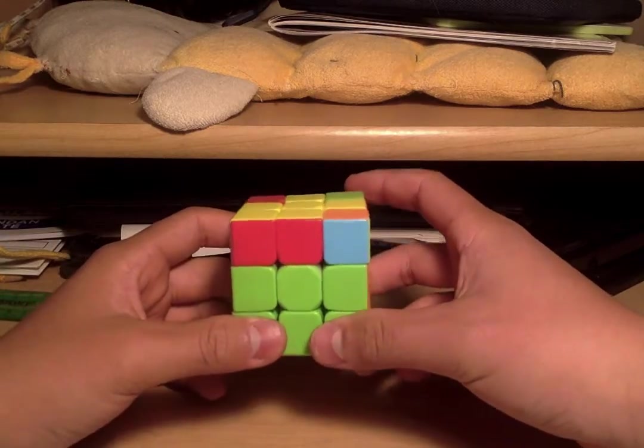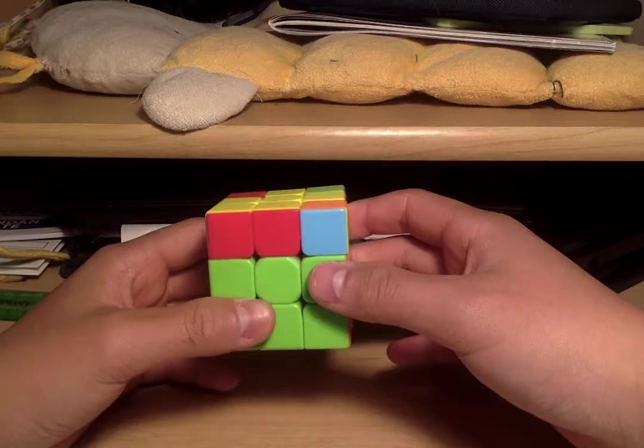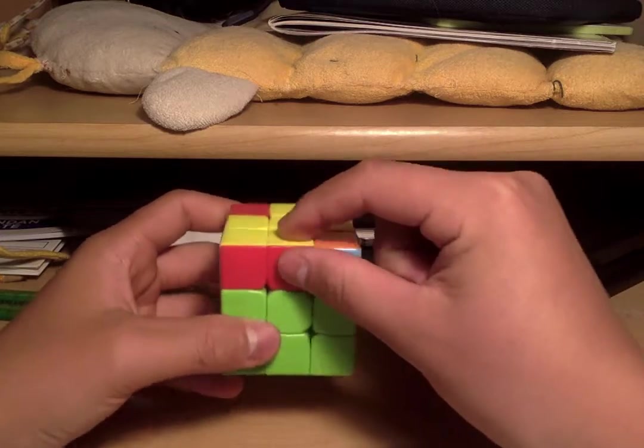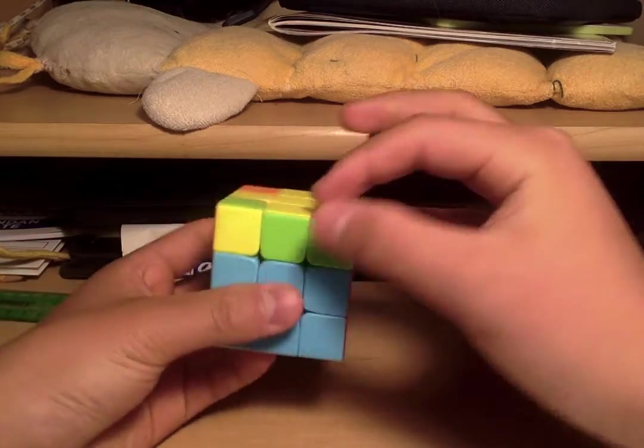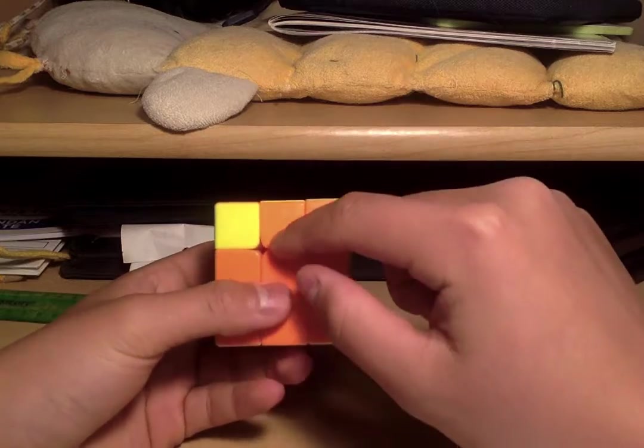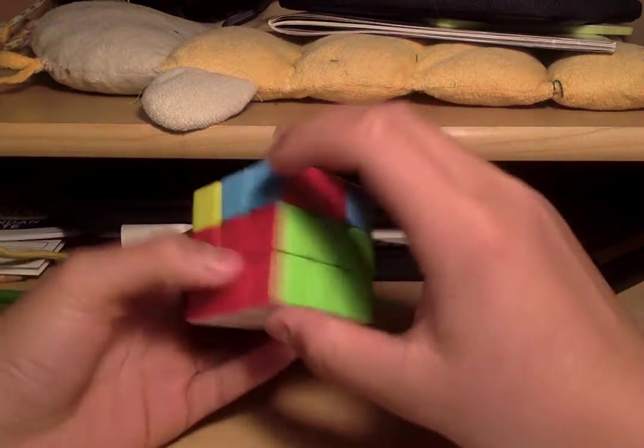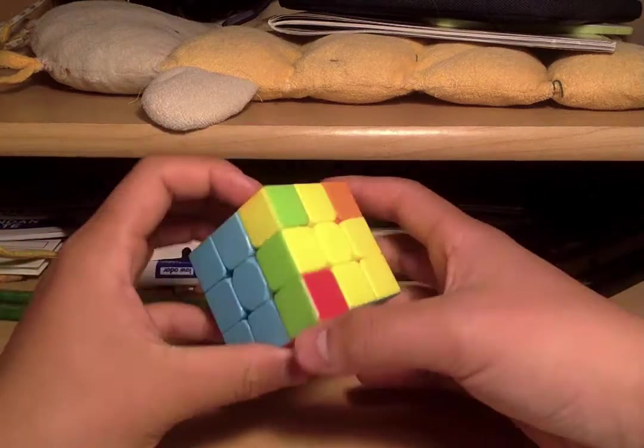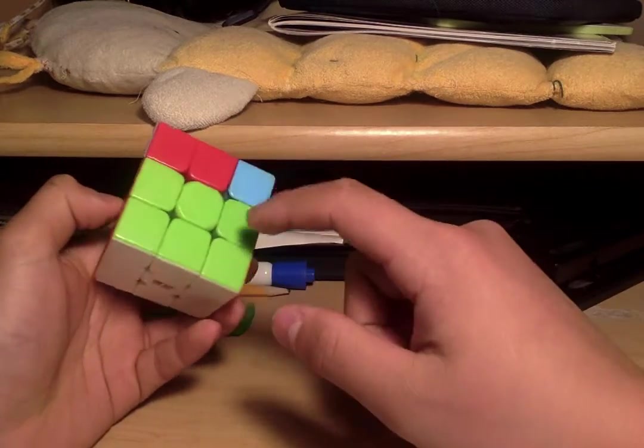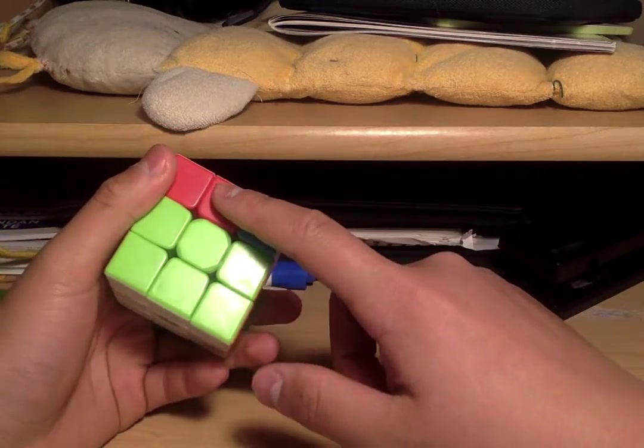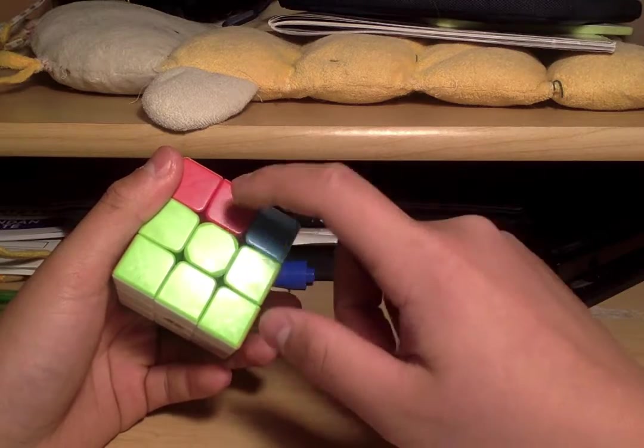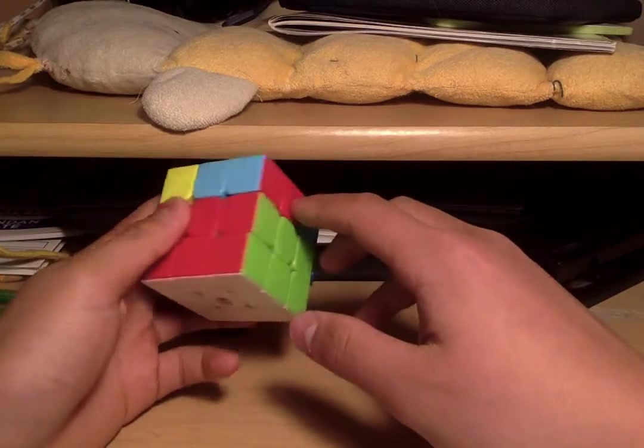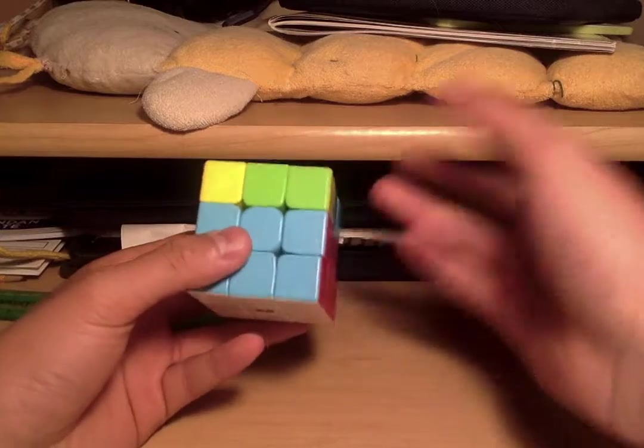First, you want to look at all the edge pieces at the top. Each of them has a color, and in this video your goal is to match the center piece color with the edge piece color right on the top.